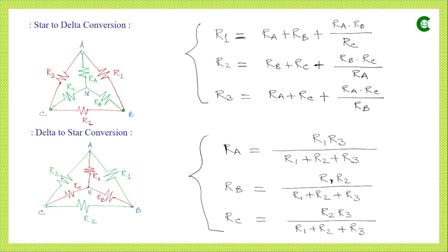In the second figure, R1, R2 and R3 drawn in green are connected in delta, and Ra, Rb and Rc are connected in star, where N is the neutral point. This time we are converting from delta to star, so we will be expressing Ra, Rb and Rc in terms of R1, R2 and R3.